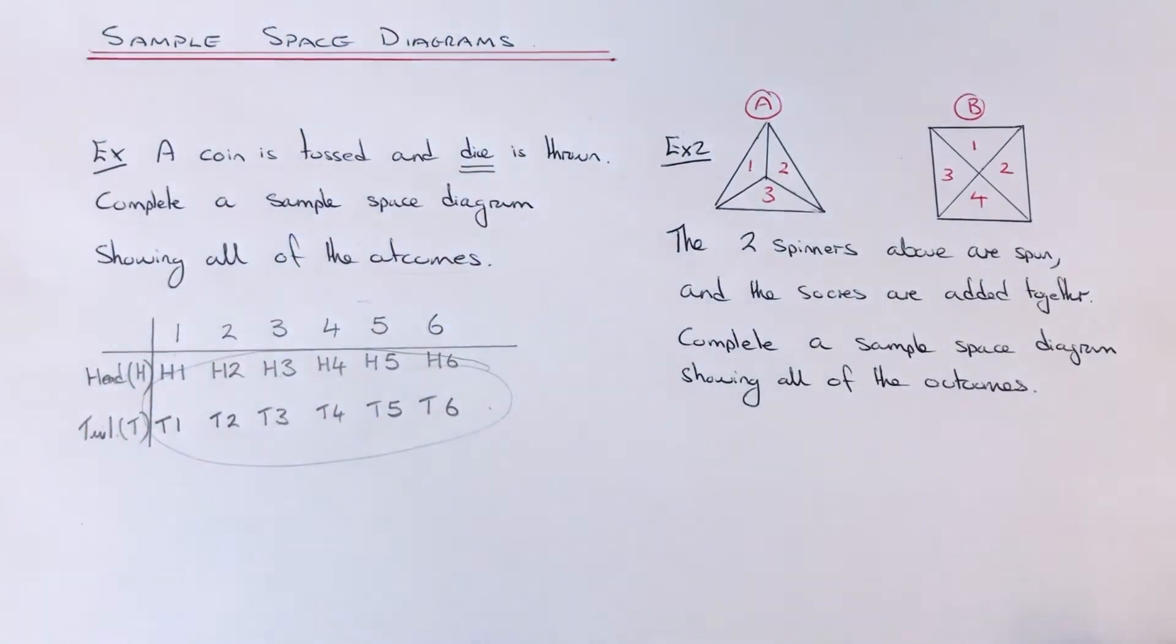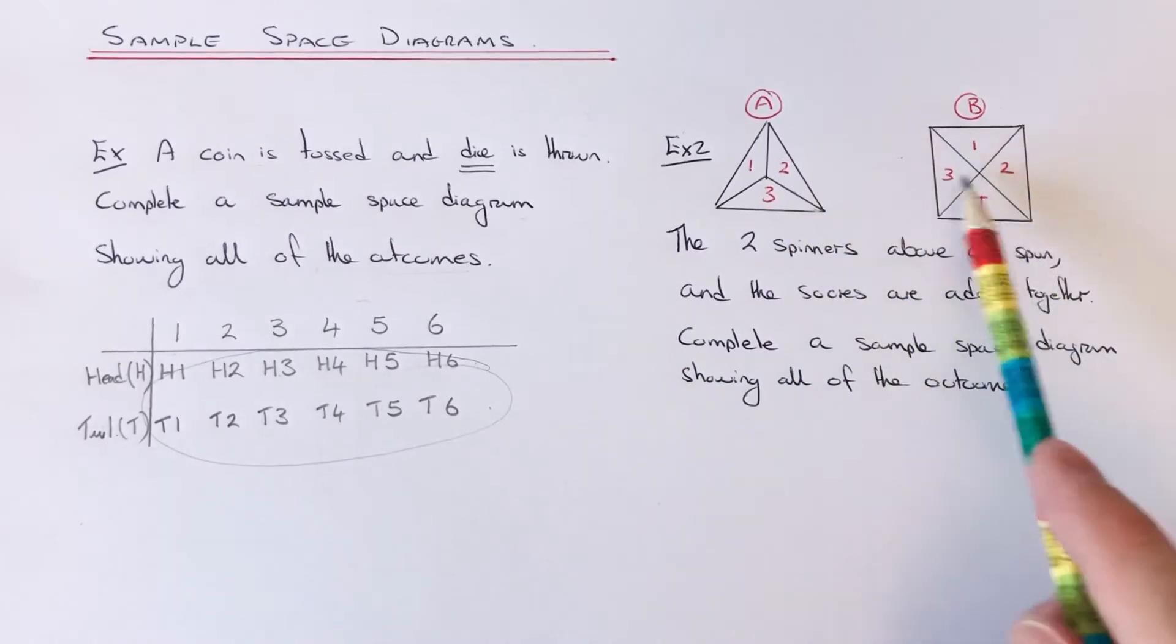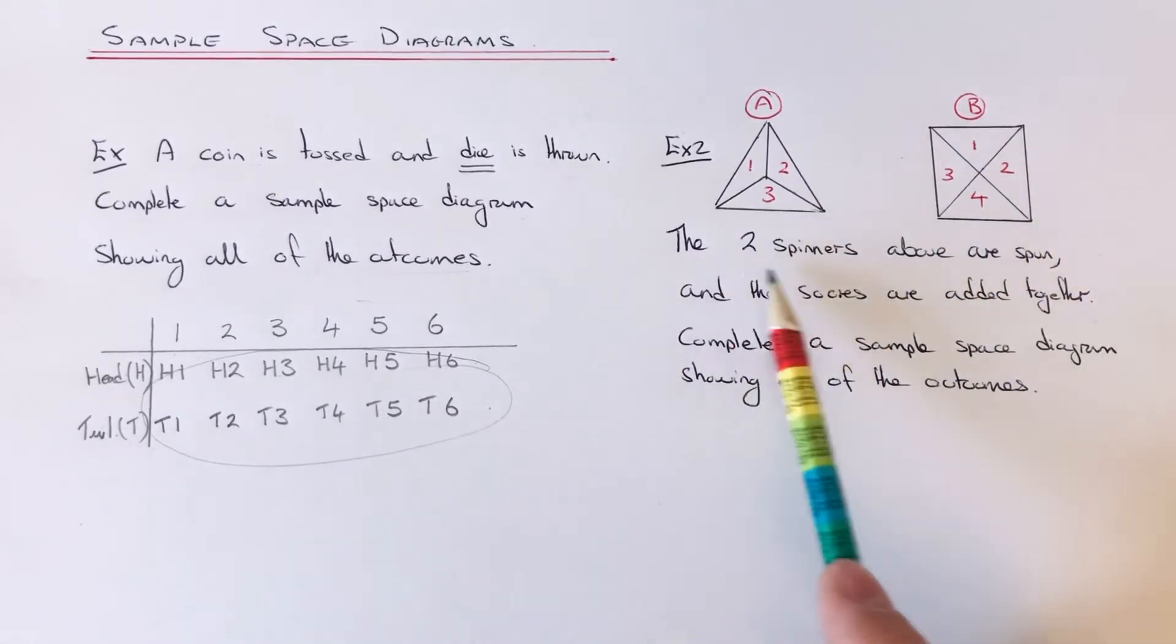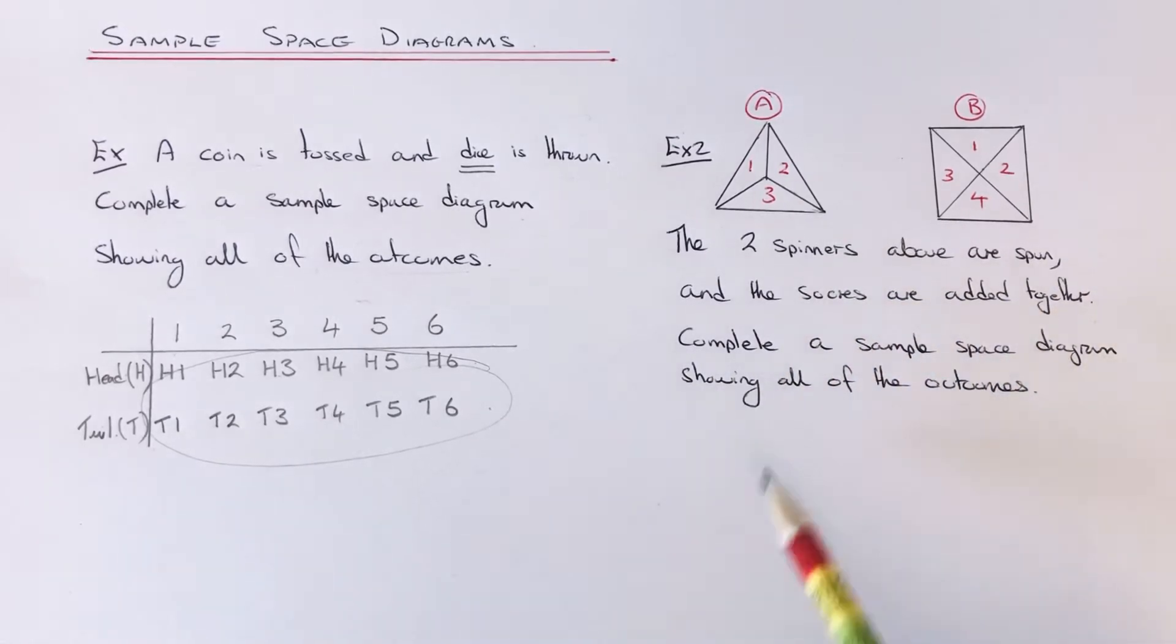Let's move to the second example. We've got two spinners: one with numbers 1 to 3 and the second spinner with numbers 1 to 4. The two spinners are spun and the scores are added together. Complete a sample space diagram showing all of the outcomes.